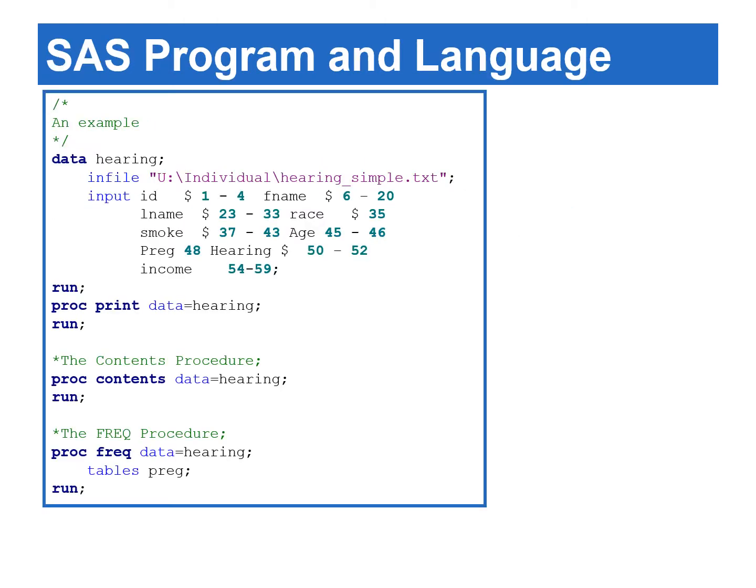A SAS program can consist of one or more data steps and/or PROC steps, which can be in any sequence. In this program, we create a SAS data set by reading a text file. Then we use PROC PRINT to print the data, and use PROC CONTENTS to list the descriptor portion of the data. In the end, PROC FREQ creates a frequency table for the variable PREG.